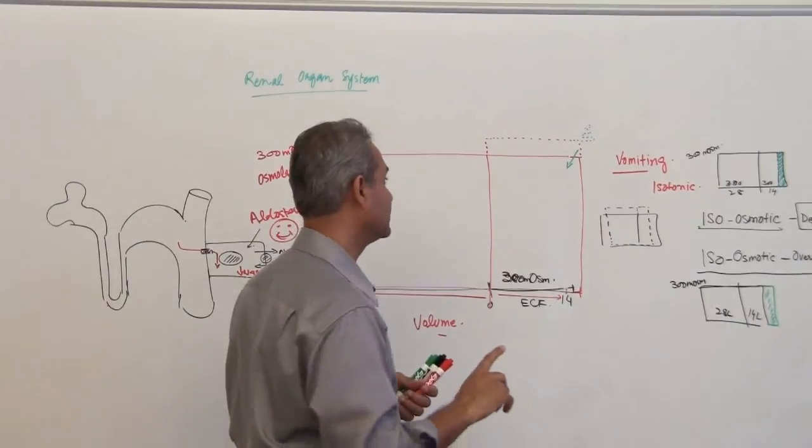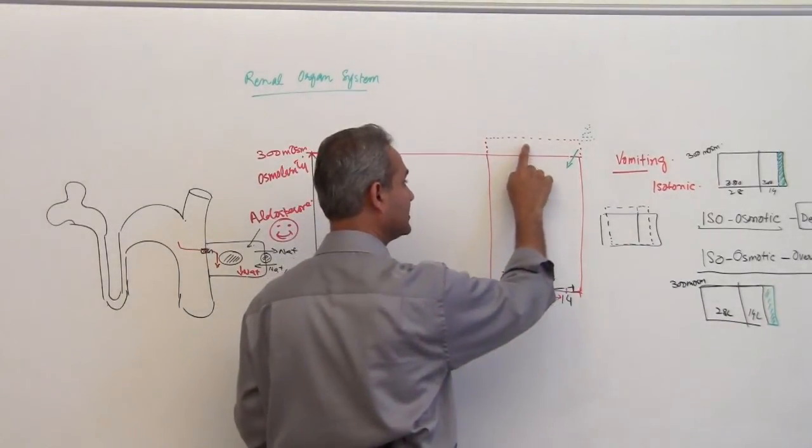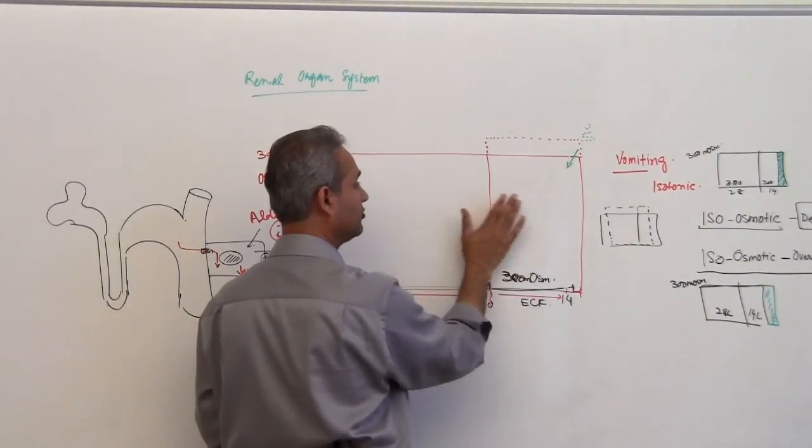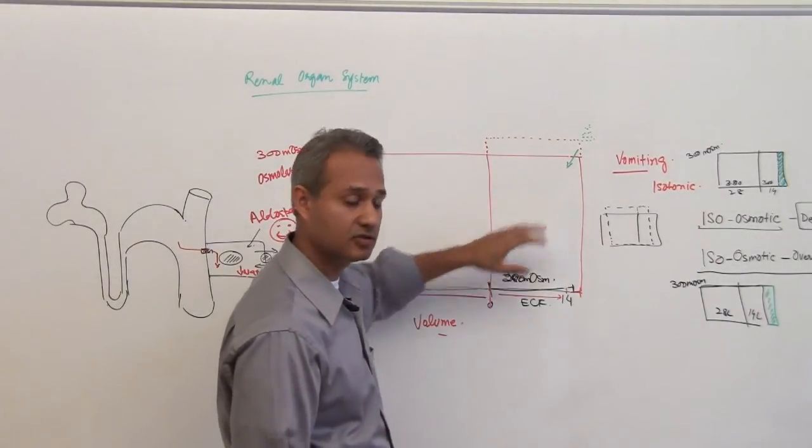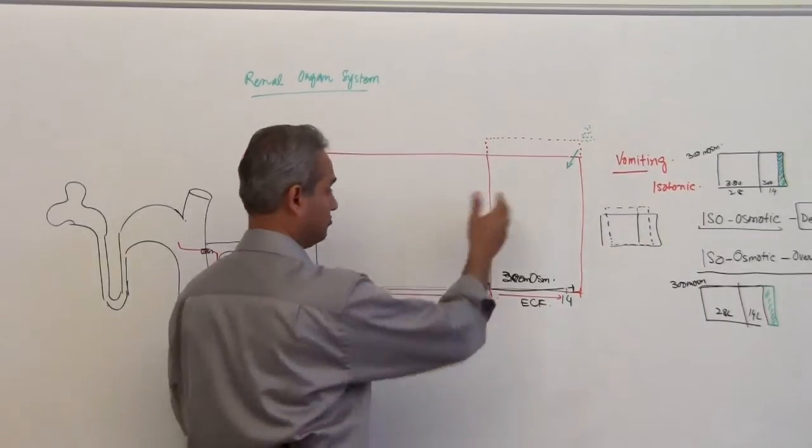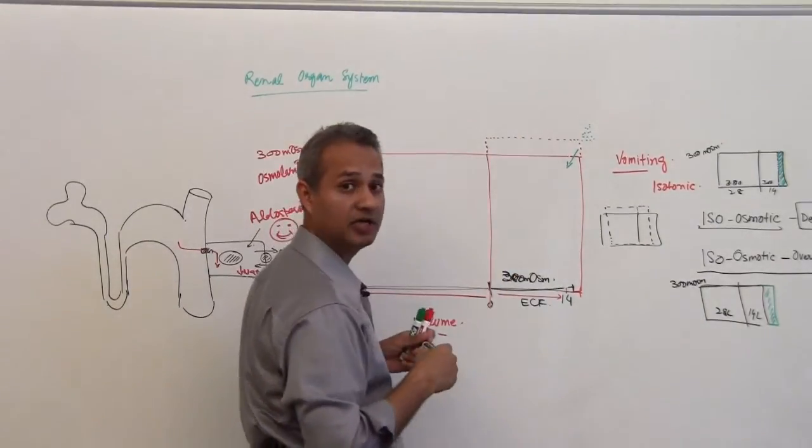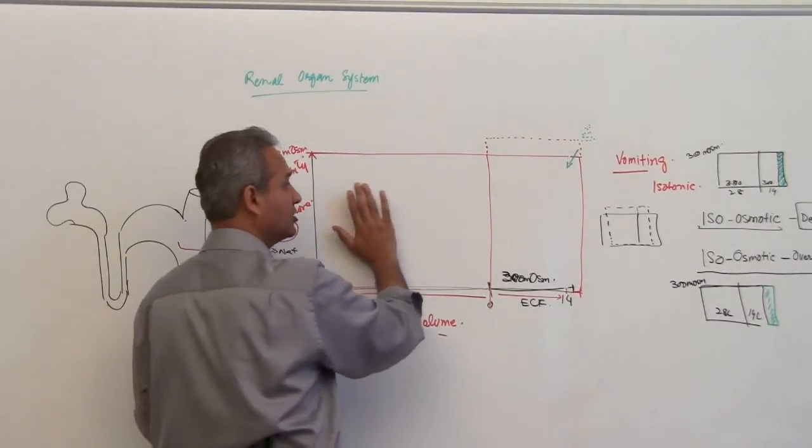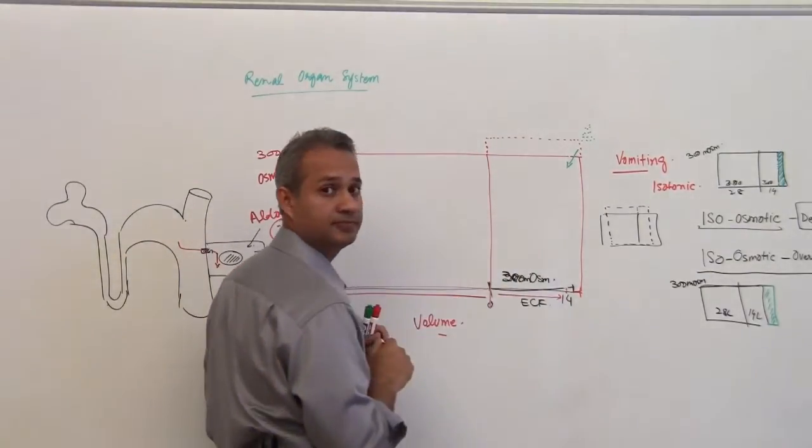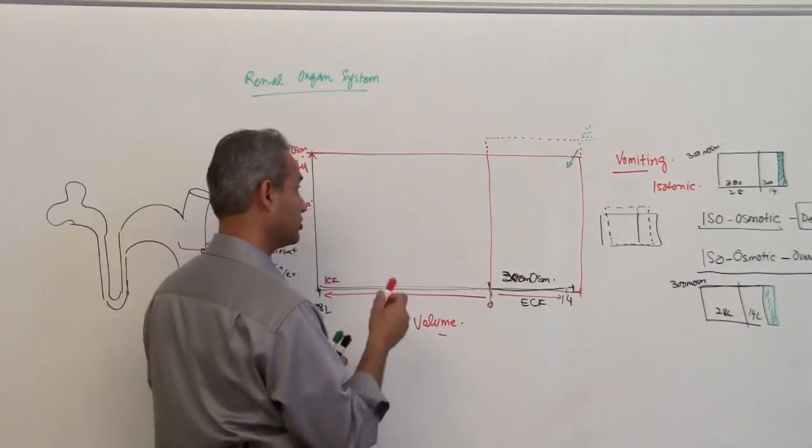Now, the question is, if the osmolarity increases here, what is going to happen to the water? So again it is very simple. The osmolarity here is increased. So let's say it went up from 300 to 310 milliosmoles. Water concentration is more over here relatively, so this water is going to move.